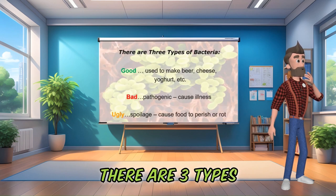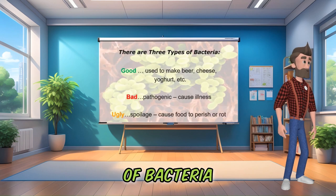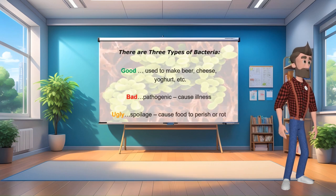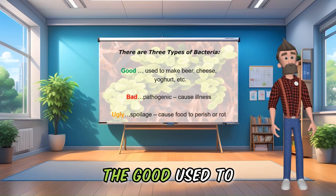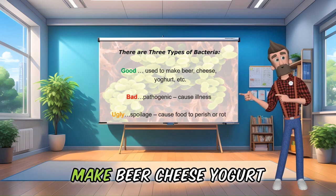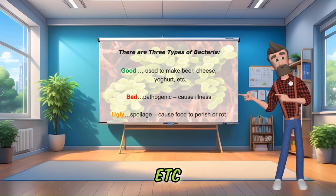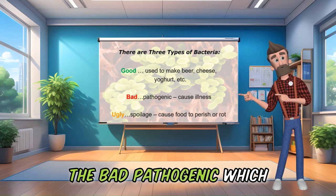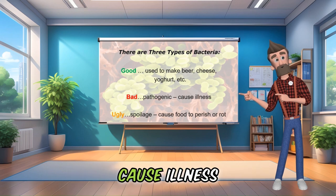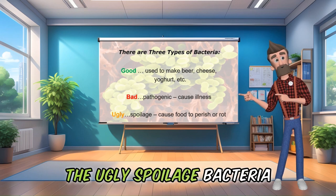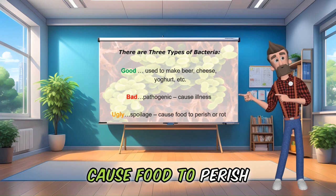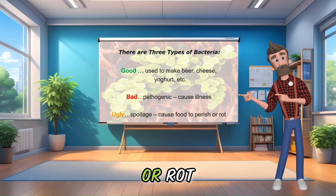There are three types of bacteria. The good, used to make beer, cheese, yogurt, etc. The bad — pathogenic — which cause illness. The ugly: spoilage bacteria cause food to perish or rot.